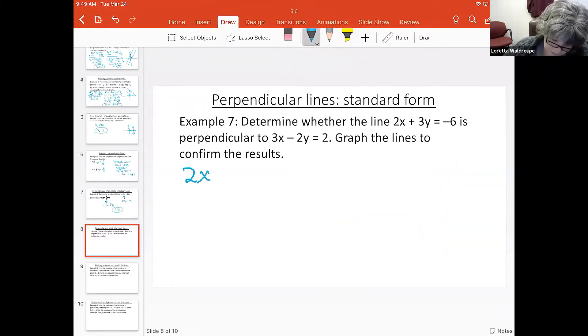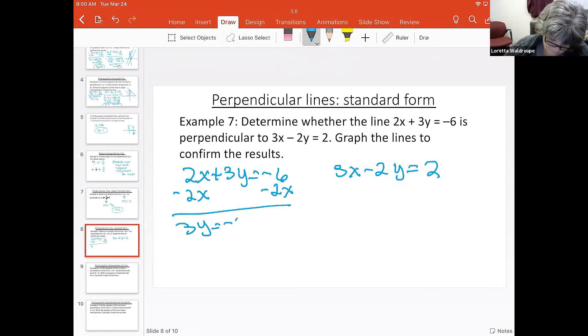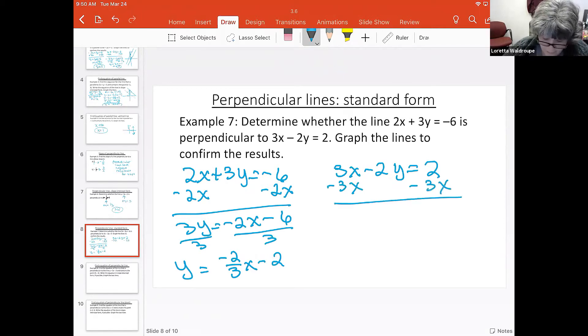What about these two lines? To determine if they have perpendicular lines, the first thing you have to do is solve the equations for y. Over here on the left, I'm going to subtract 2x from both sides and then divide everything by three. So I get negative two over three x minus two. Same thing over on the right, I'm going to subtract 3x because I'm trying to get y by itself, and then divide everything by negative two.